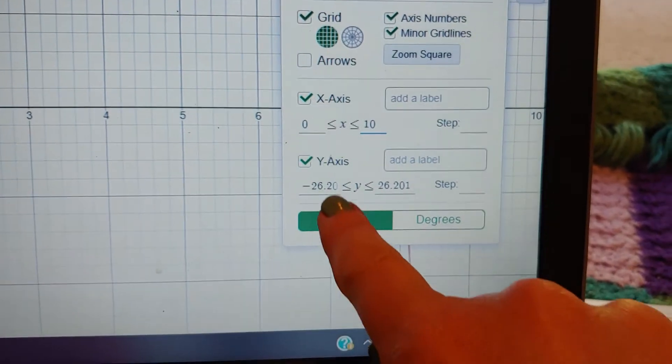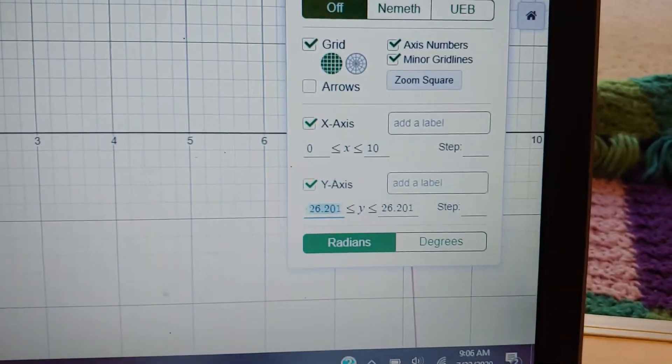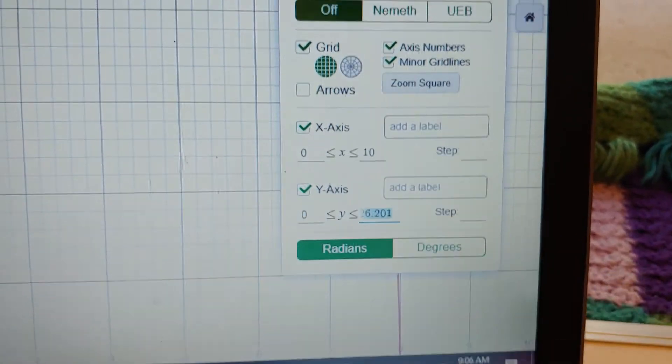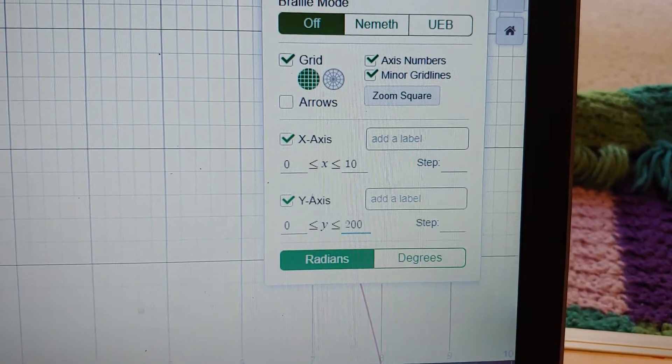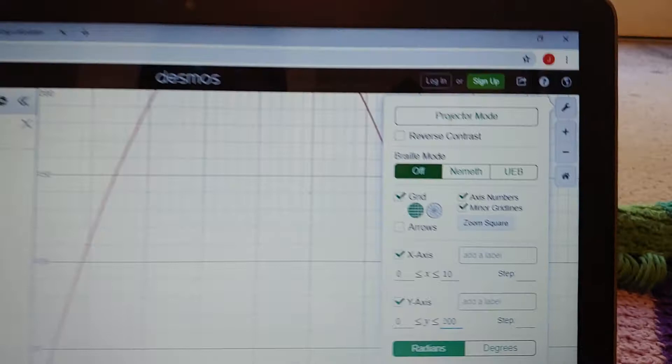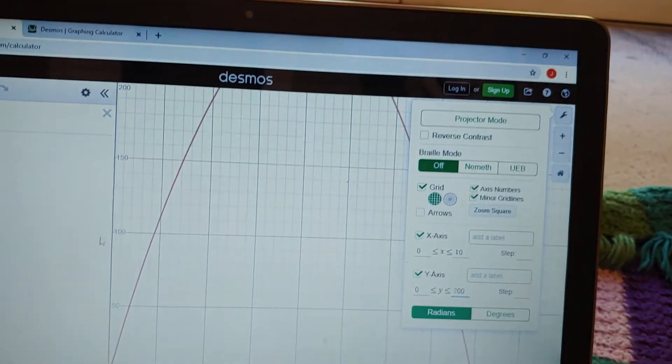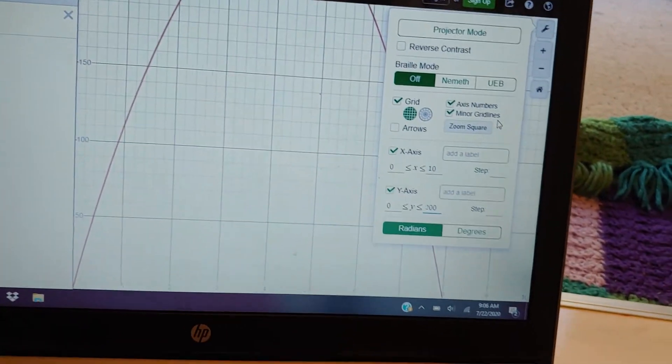And then my y-axis, I will also start that at zero and we'll go up. I think I need it close to like 200. Let's see what it's looking like. It's looking a little bit more. It looks like I need to go maybe a little bit bigger.